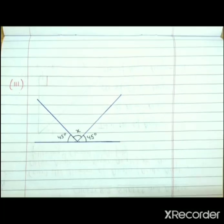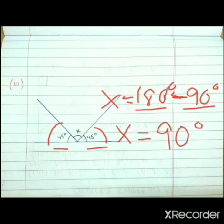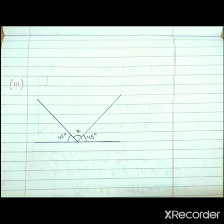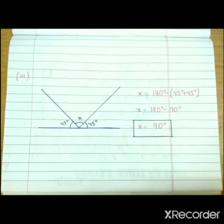So x is equals to 180 degree minus this angle and this angle. What is the total of these two angles? 45 plus 45 equals to 90 degree. So 180 degree minus 90 degree equals to 90 degree. So the value of x equals to 90 degree. As we can also see, this is the baseline and this line is standing straight on the baseline, so this angle is equal to 90 degree, which is a right angle. Here you can see the solution.